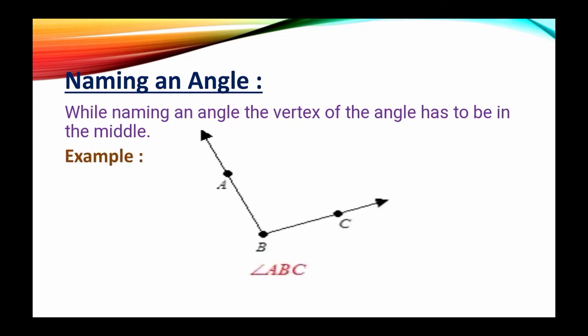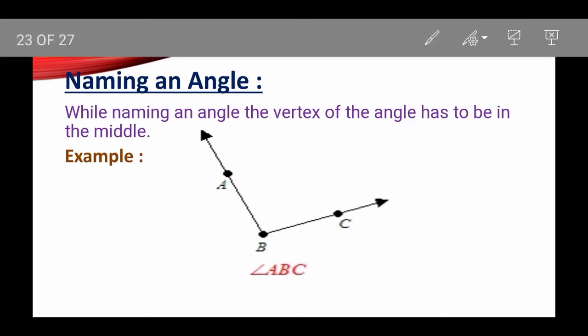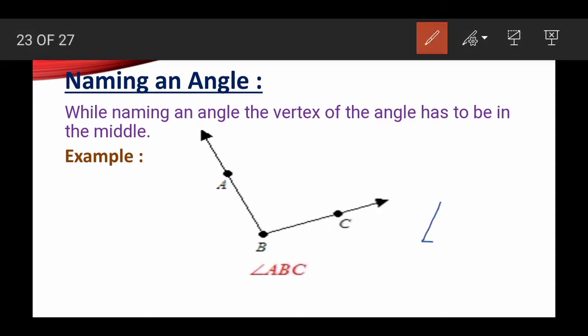Here is an example. Look at here. Here the two arms are BA and BC. So here the vertex is B. So we have to put the letter in the middle of the other two letters. So here the name of this angle is angle ABC. And you have to put the sign of the angle like this one. So this is angle ABC.